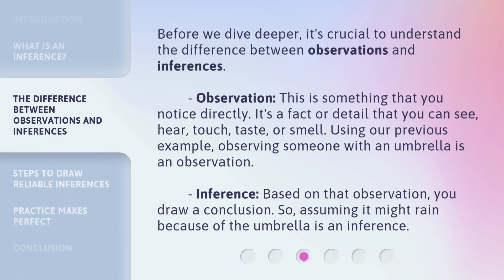Before we dive deeper, it's crucial to understand the difference between observations and inferences. Observation: this is something that you notice directly. It's a fact or detail that you can see, hear, touch, taste, or smell. Using our previous example, observing someone with an umbrella is an observation. Inference: based on that observation, you draw a conclusion. So, assuming it might rain because of the umbrella is an inference.